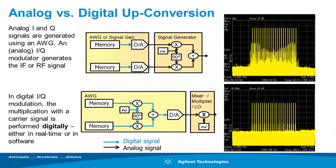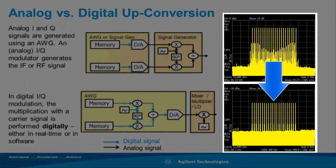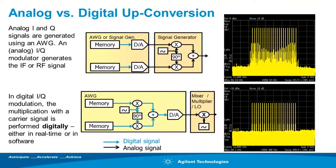Digital upconversion moves the IQ upconversion process into the digital domain, which completely removes distortions such as images and carrier feed-through. The digital upconversion is done in real-time inside an Agilent proprietary ASIC.